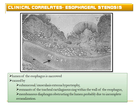Another abnormality is esophageal stenosis — narrowing of the lumen — caused by hypertrophy of the submucosa or muscular layer. Sometimes tracheal cartilaginous rings may be present around the esophagus. Failure of the recanalization process can also cause stenosis, resulting in decreased lumen diameter. These are the different causes of esophageal stenosis.